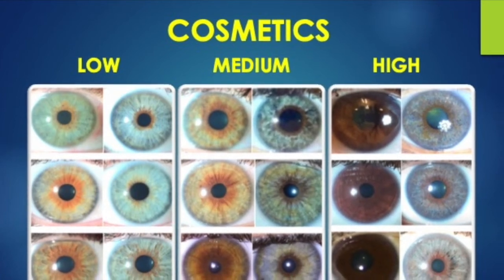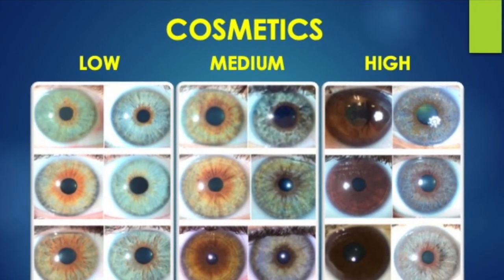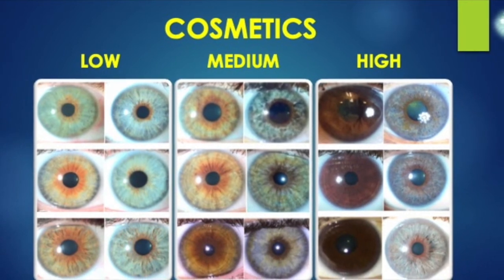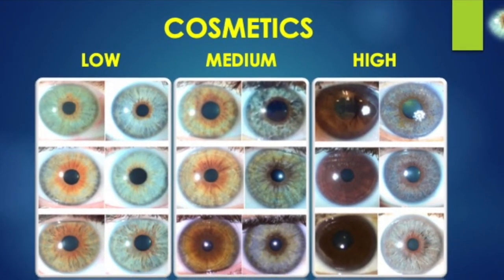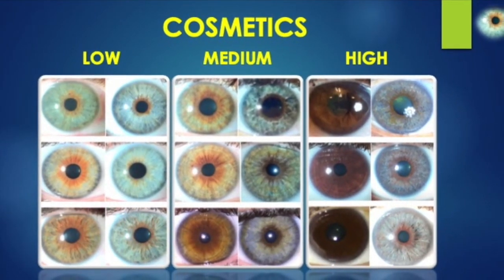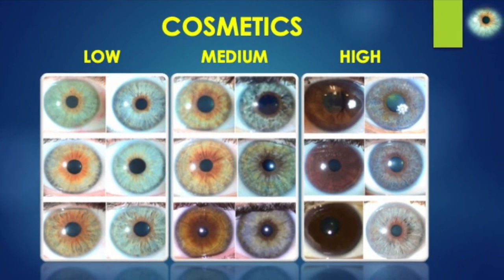Usually, light eyes change to light blue tones, those with medium pigment to turquoise blue-green, and the dark ones to different shades of grayish.